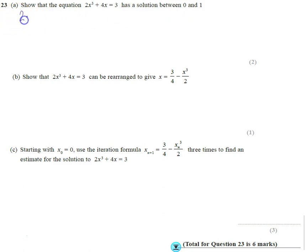I'm going to rearrange 2x³ + 4x - 3 = 0, and I'm going to test the value of x as 0 and the value of x as 1. If there is a solution between them, one of the answers will be negative and one will be positive.